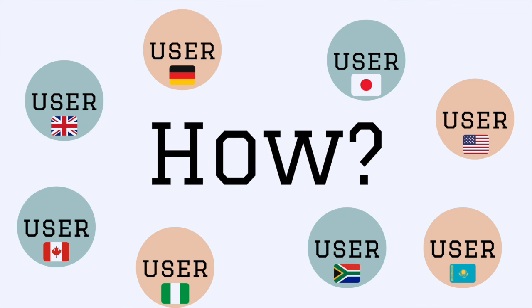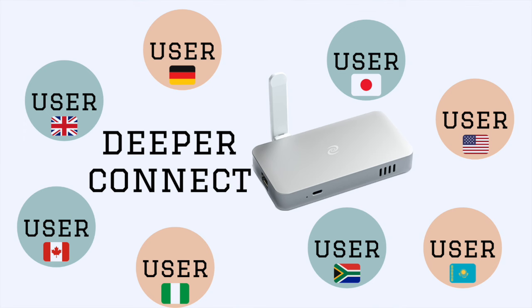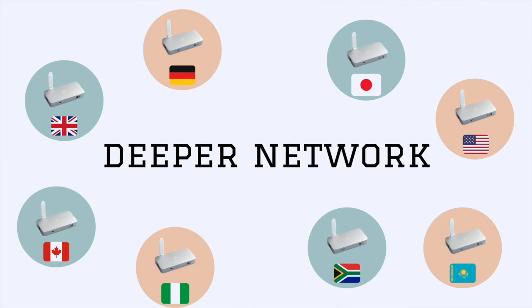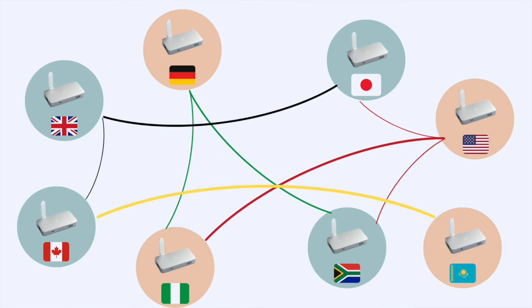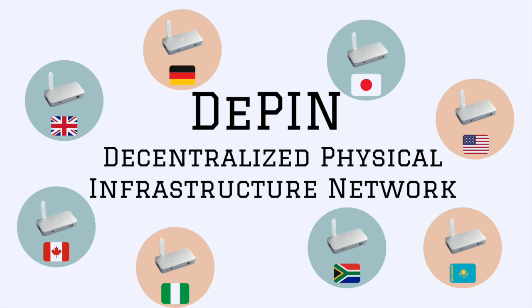Now how is this possible? Let's introduce to you the Deeper Connect. The Deeper Connect will create the deeper network. A user will hook up their device into their home internet and it will create a sub-layer of internet, also known as Web 3.0. They will share their internet with any other user on that same network. This is also known as a DePIN project — a decentralized physical infrastructure network.